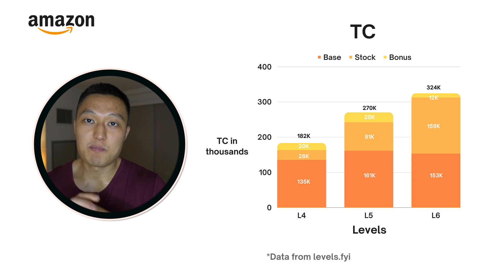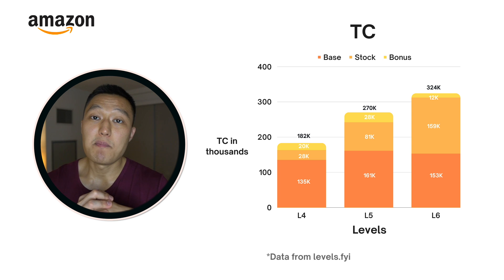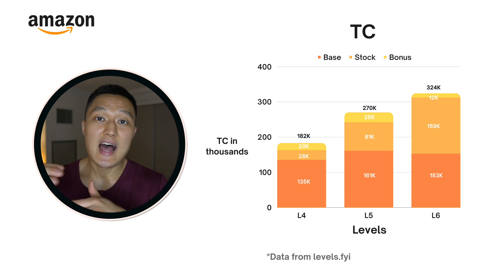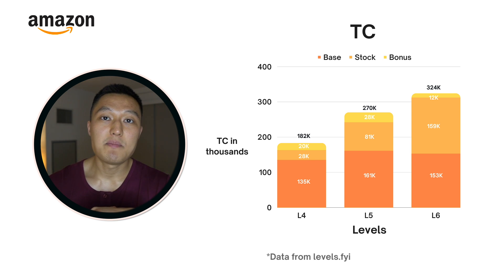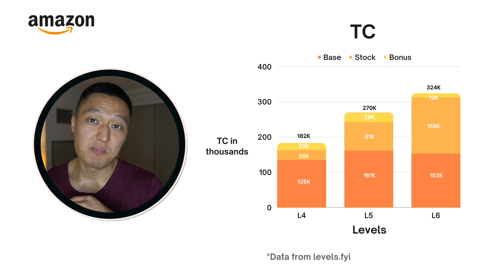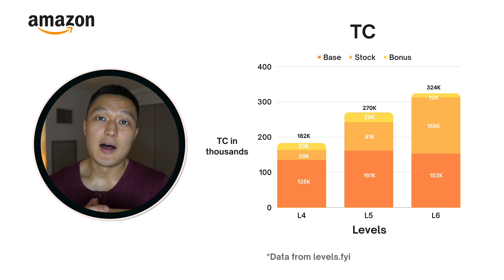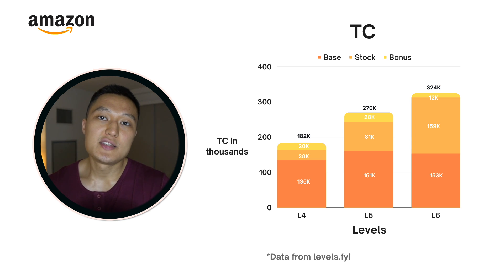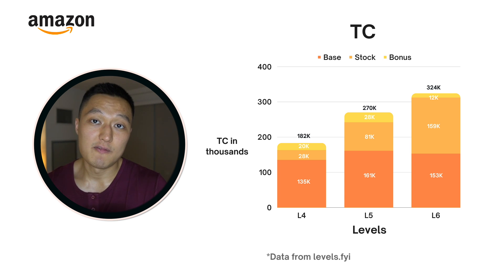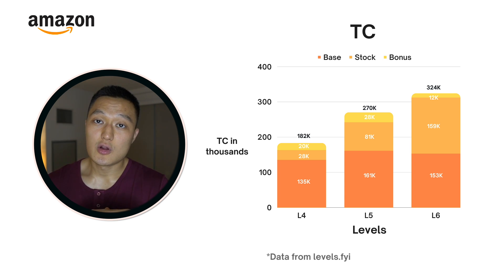There's L4, which is their entry-level position. Keep in mind that other FAANG companies like Google and Meta have different level mappings — Google's entry level is L3. For Amazon, L4 is equivalent to those L3 positions. Then there's L5, which is for candidates with maybe two or three years of data scientist or technical experience. The senior position at Amazon is L6. Compensation increases as you go from L4 to L5 to L6.